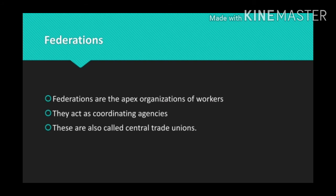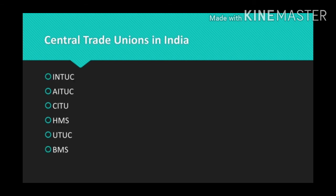To summarize, the organization structure of labor in our country includes four types: craft union, industrial union, general union, and federation. The central trade unions in India include INTUC — Indian National Trade Union Congress — formed in 1947, and AITUC — All India Trade Union Congress — formed in 1920.